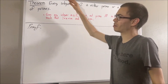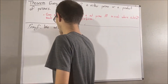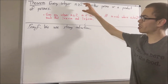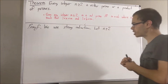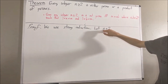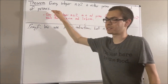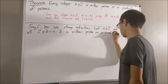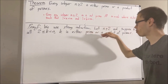Since we're trying to prove a statement about every integer greater than or equal to 2, let's use strong induction. To use strong induction, we start out by giving ourselves an arbitrary integer greater than or equal to 2 — I'll call it n. And we suppose that for all integers k greater than or equal to 2 that are less than n, we have that k is either prime or a product of primes.